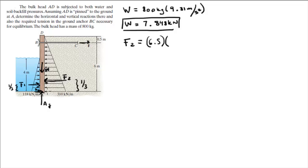As you can see, the triangle has a length of 6.5 meters times the height of the triangle, which is 310 kilonewtons per meter, divided by 2 because the area of a triangle is height times length divided by 2, and that is equal to 1007.5 kilonewtons. That's a lot of pressure.